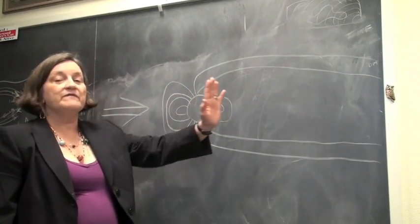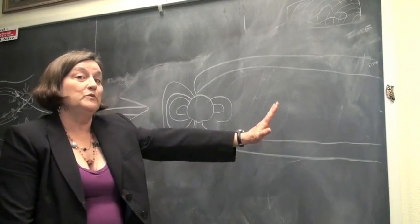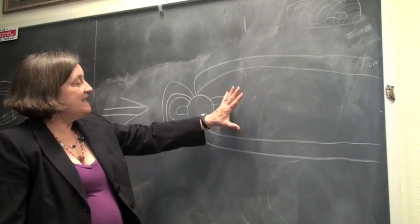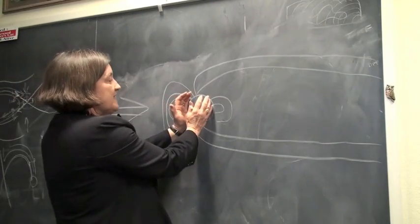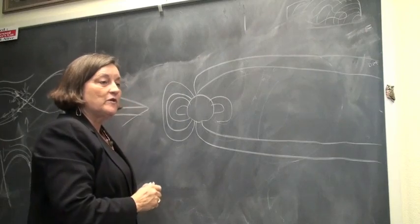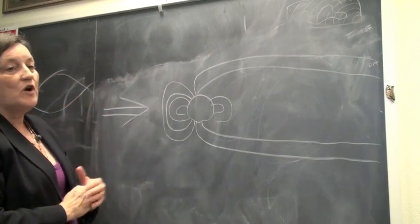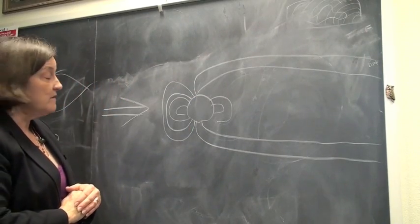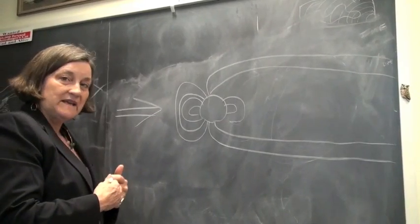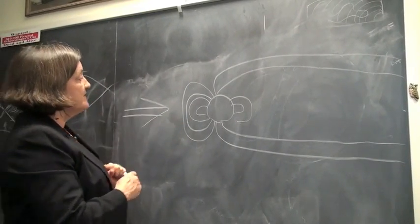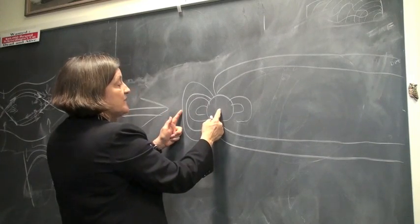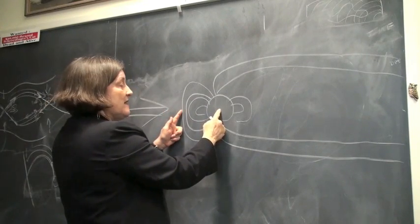This tail is very, very long. It extends more than five times the distance to the Moon. So when you see the Earth from space, you're only seeing a little bit of the region that the Earth controls. And that region is called the magnetosphere because it's the sphere of influence of the Earth's magnetic field. I've not drawn this to scale — to scale, this distance is five times the Earth's diameter.